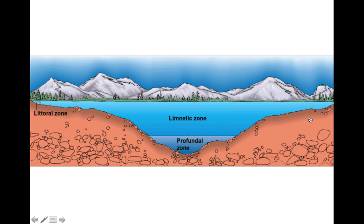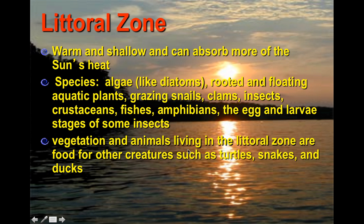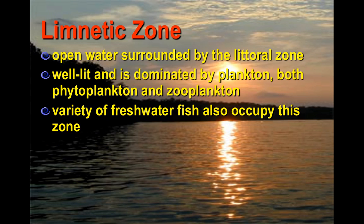The littoral zone is on the edges — it's warm, shallow, and lots of sunlight can penetrate through. Animals found here include aquatic plants, snails, clams, fish, and amphibians, just to name a few. The vegetation on the edge is great for animals that love to feed there, such as turtles, snakes, and ducks.